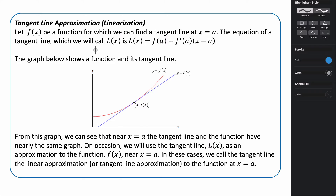The equation of the tangent line — this is where the linearization idea comes in — is L(x) = f(a) + f'(a) times the quantity (x minus a). This is centered around the point x equals a. It's really just a fancy way of rewriting slope-intercept form: f(a) is the y₁, f'(a) is the slope, and (x minus a) is the x minus x₁ term.